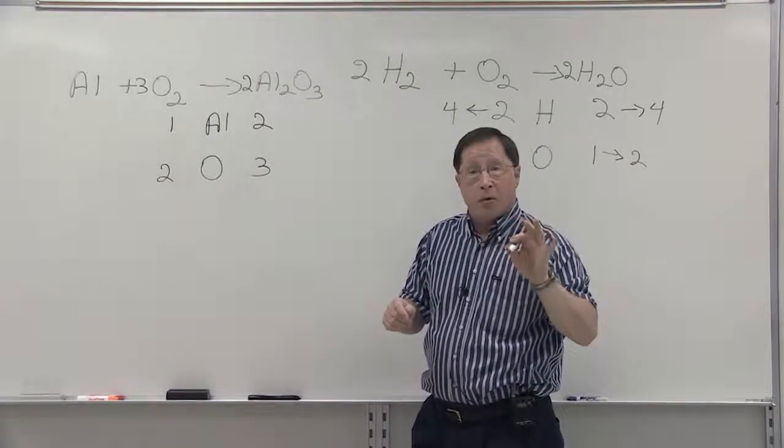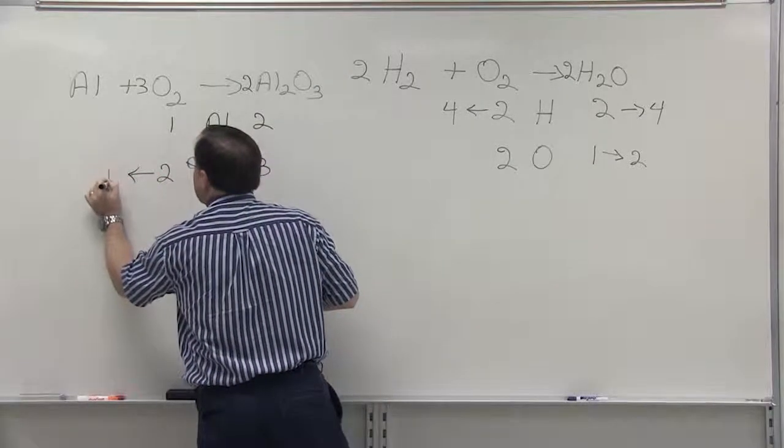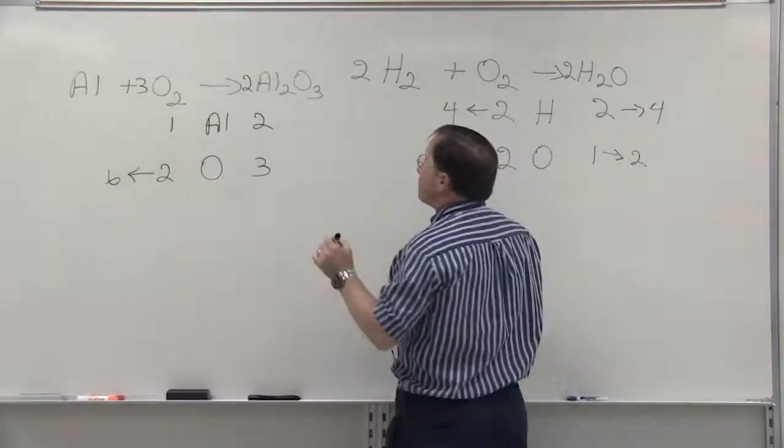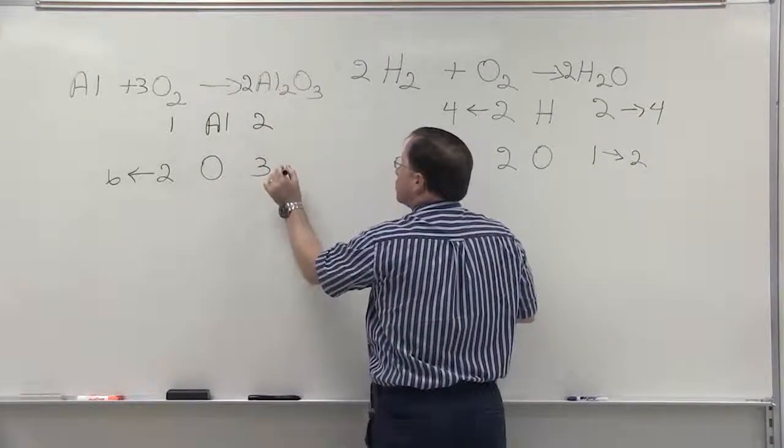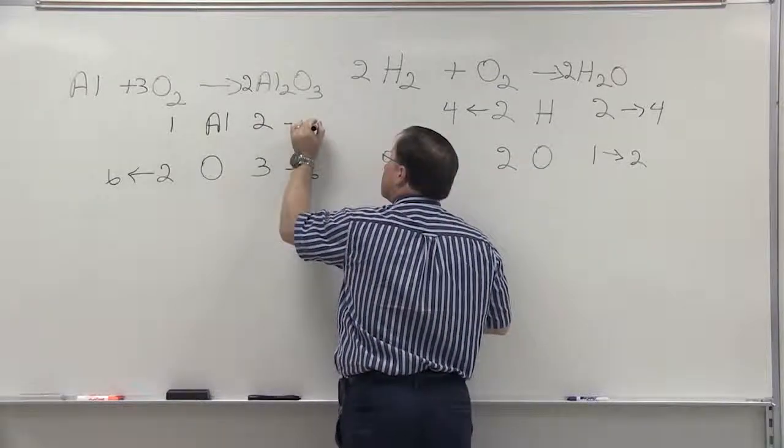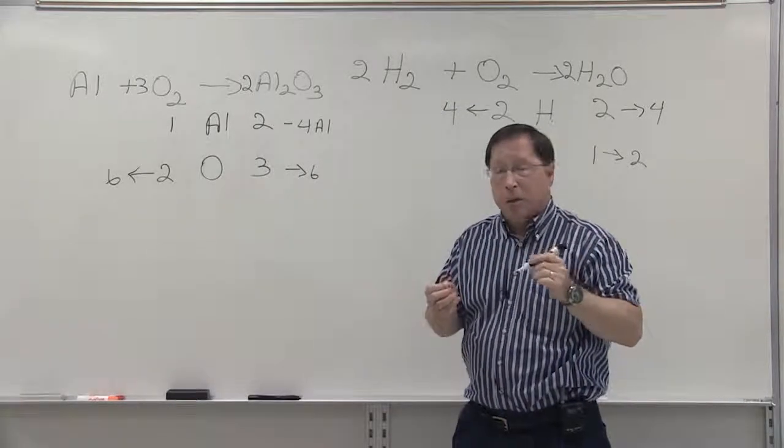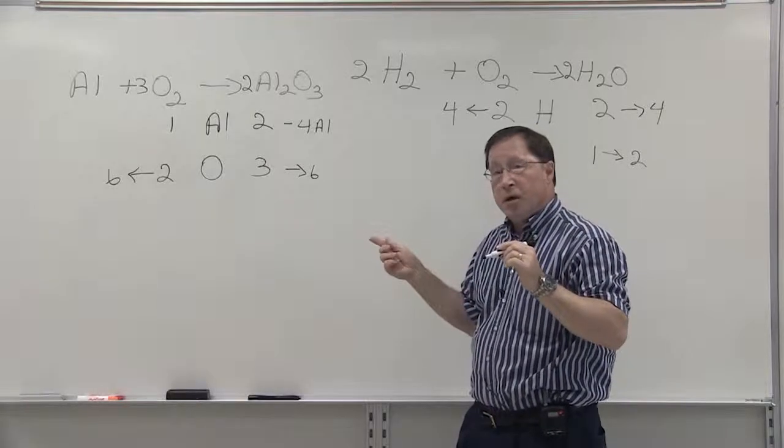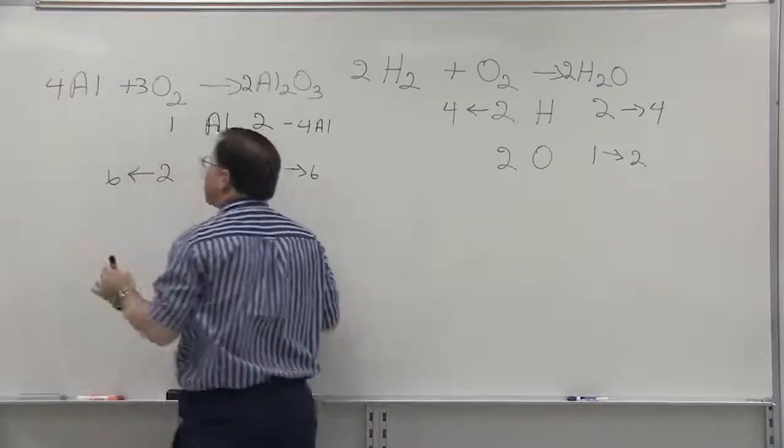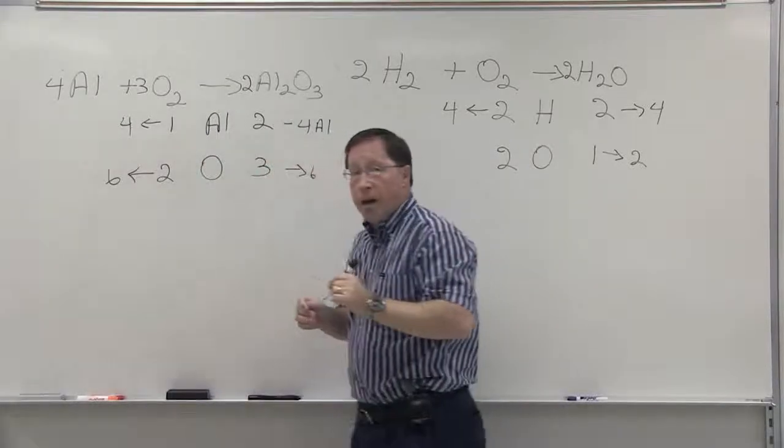When we change the three on the left-hand side, we have six oxygens. We still have one aluminum. On this side of the equation, we have six oxygens, but we now have four aluminums. So the question becomes, how do we complete the balancing? We do that by changing the coefficient in front of the aluminum. When we do that, we balance the equation.